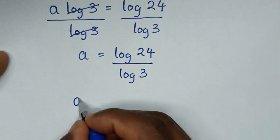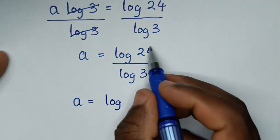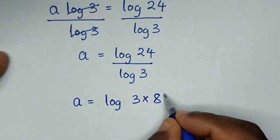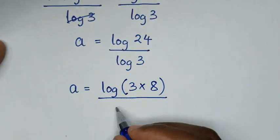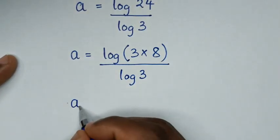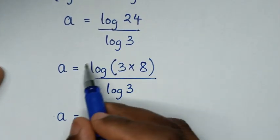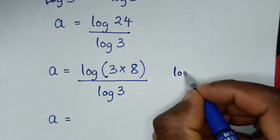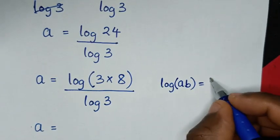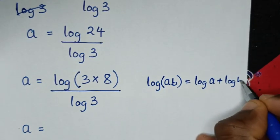Then in the next step, it will be a is equal to log of 24 over log of 3. Now 24 is the same as 3 times 8, so it will be a is equal to log of 3 times 8, over log of 3. This part is in the form of log(a × b) which is equal to log a plus log b.